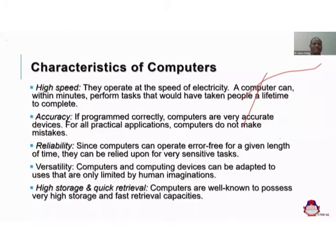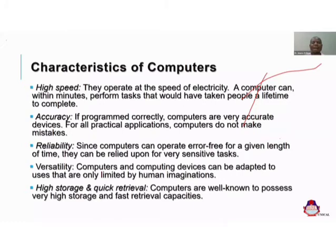The fourth characteristic is versatility — meaning something can be put to several uses. We now only try to check what areas of human endeavor computers have not yet been deployed to handle, because you cannot count all the areas where computers have already been deployed. In the old days, you could simply count areas where computers can be used. But now you can only count areas where computers are not yet deployed, because they are versatile and applied in almost every area of human endeavor.